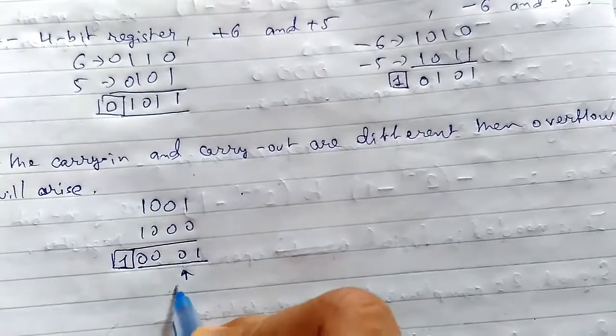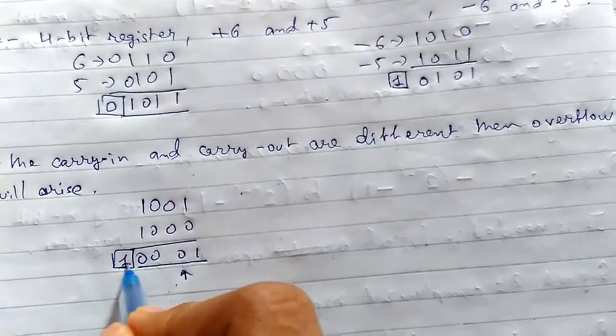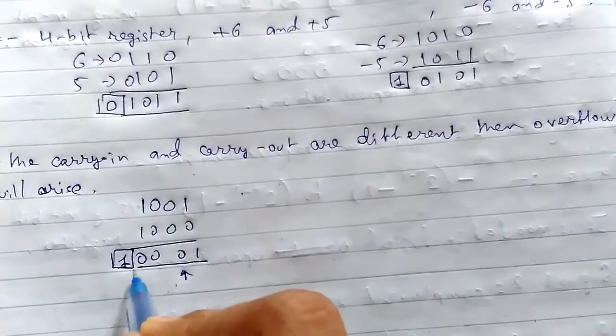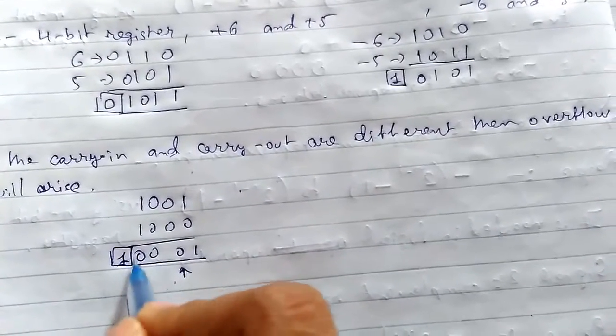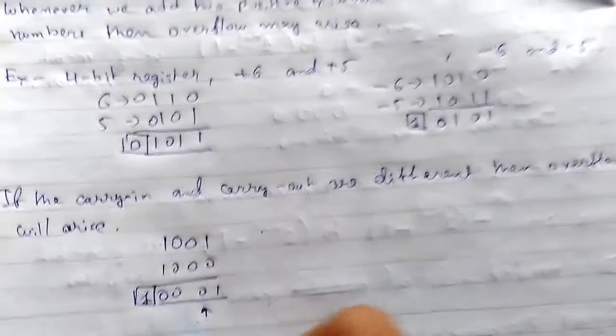Actually, 9 plus 8 is 17, so the extra bit is ignored. This is overflow.